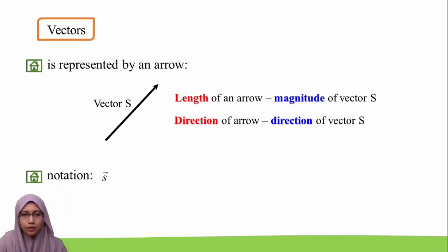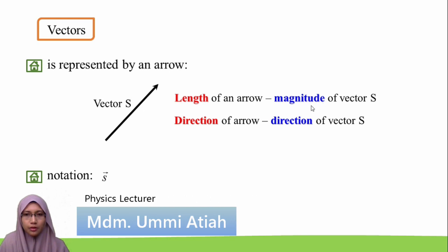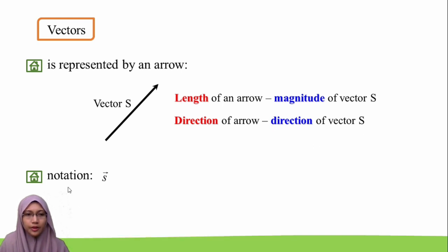Let us focus on vectors. A vector is represented by an arrow. For example, vector S is shown by an arrow where the length of the arrow represents the magnitude of vector S, and the direction of the arrow tells us the direction of vector S. A vector is denoted by a letter with a small arrow on top of it.